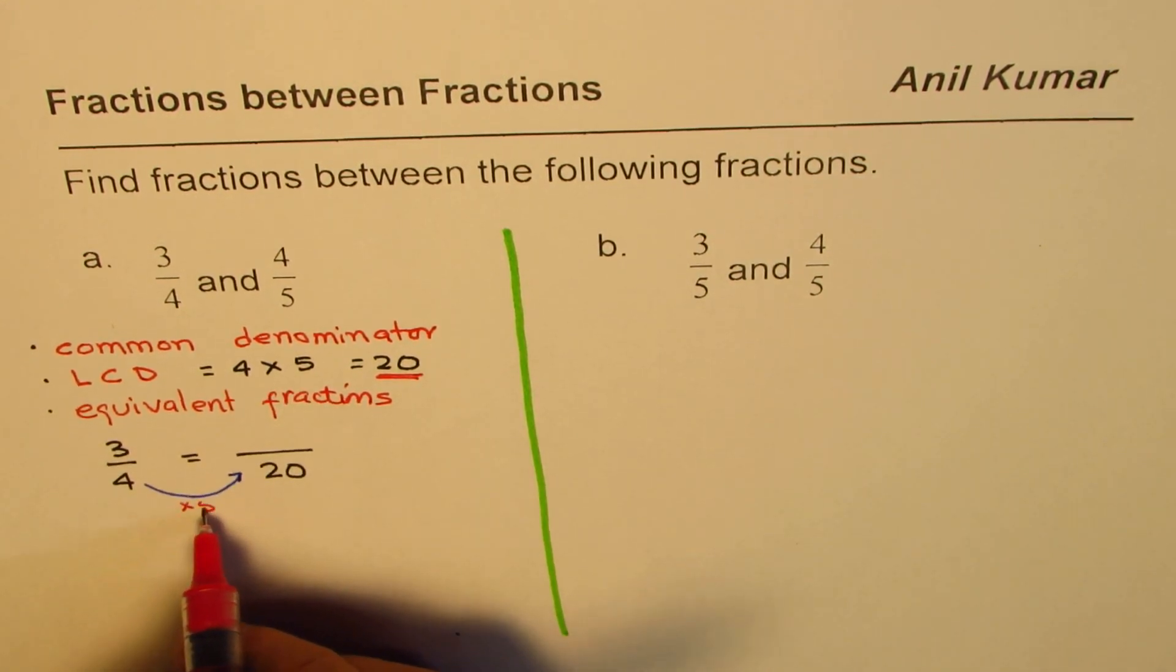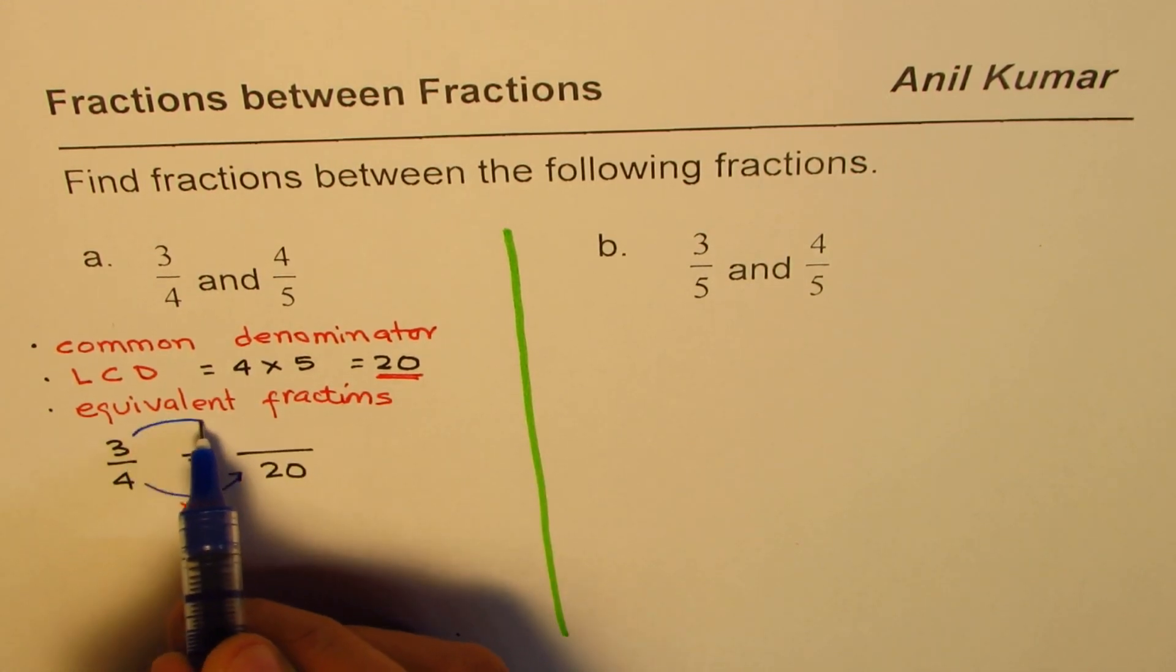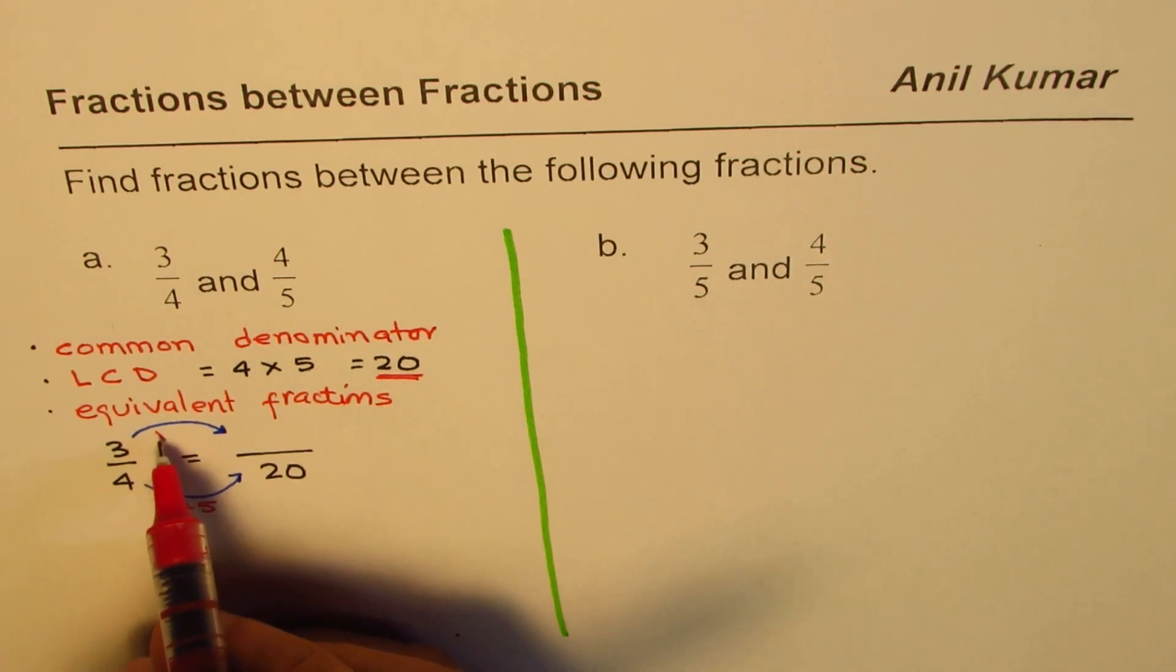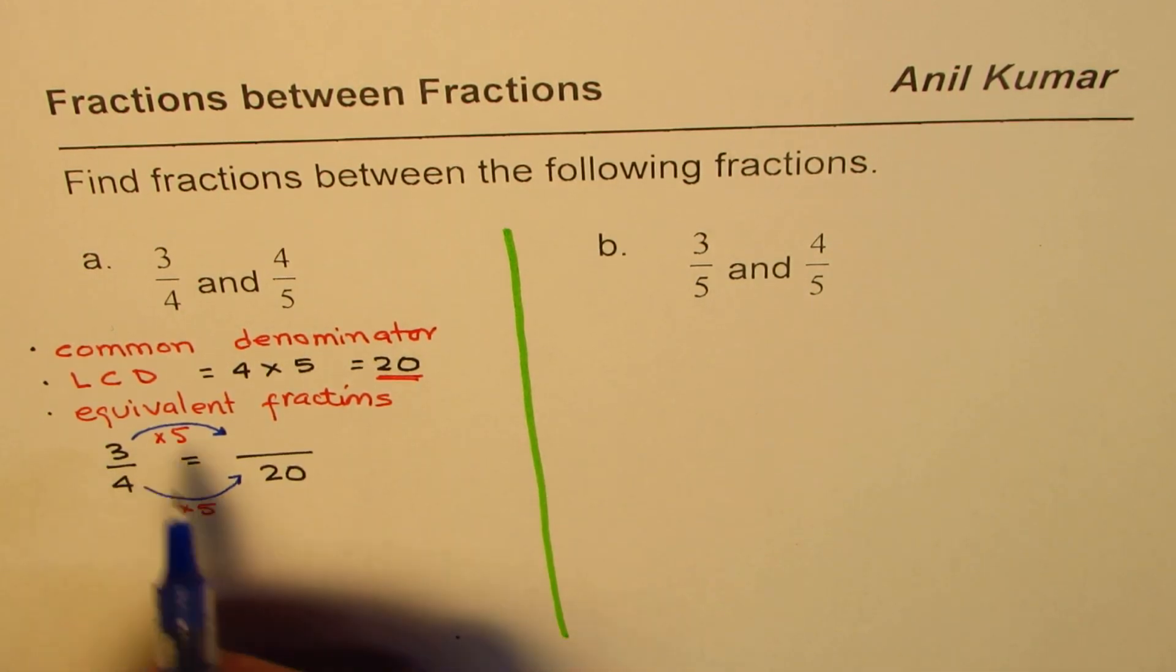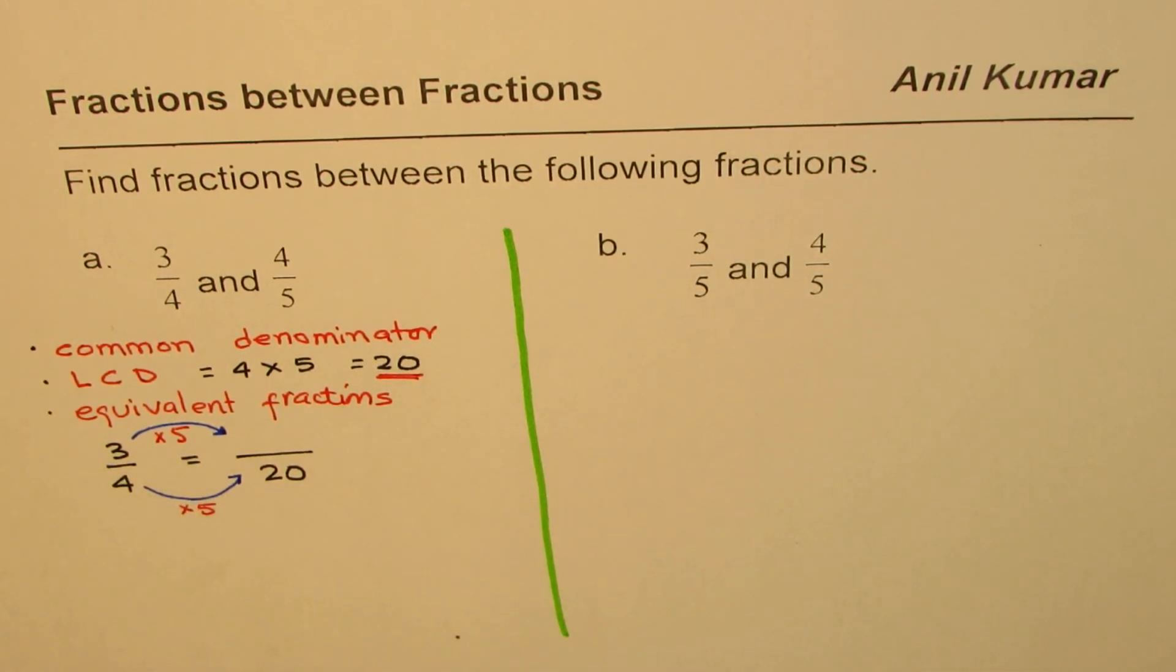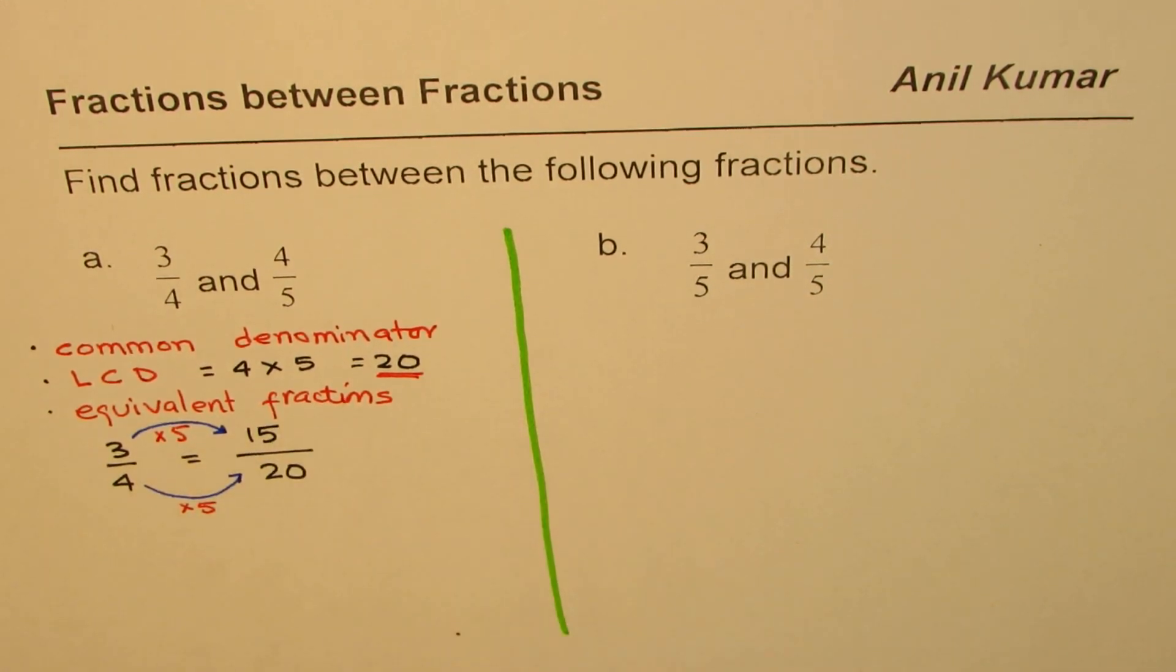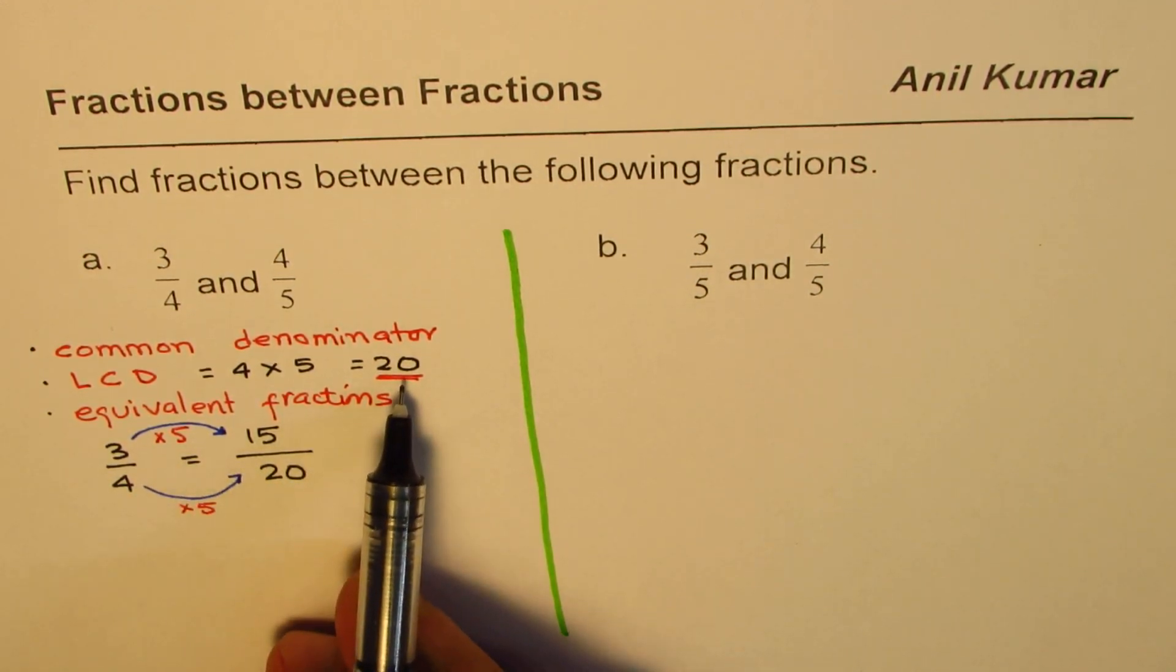Then if we are looking for equivalent fractions we have to multiply the numerator also by the same number which is 5. So if I do 3 times 5 what do I get? 3 times 5 is 15. So I get 15. That is how we write the equivalent fractions with the lowest common denominator.